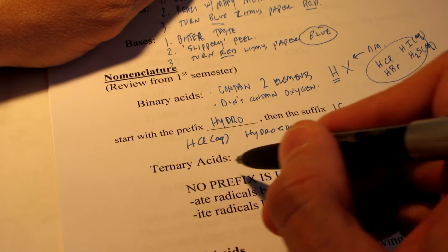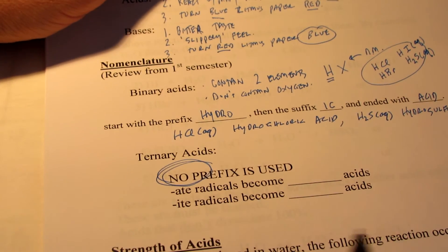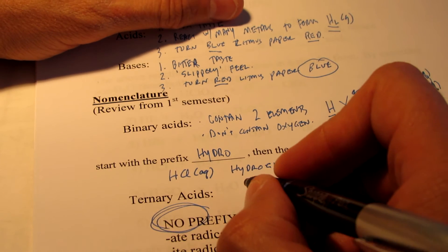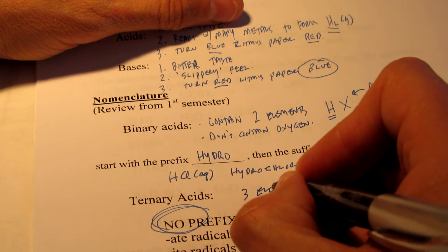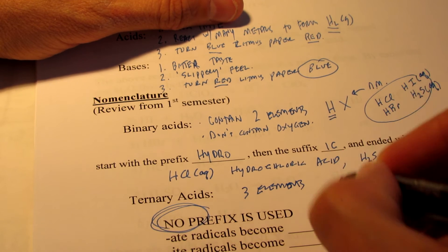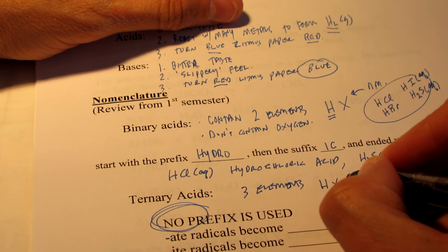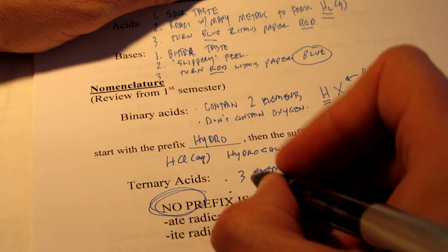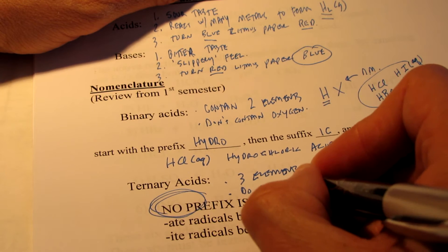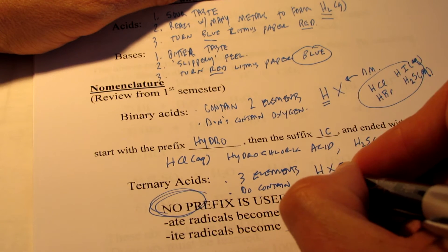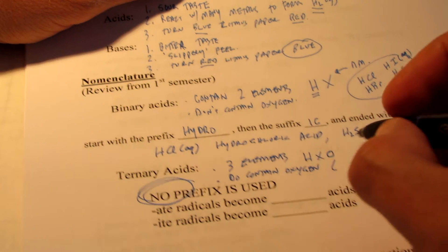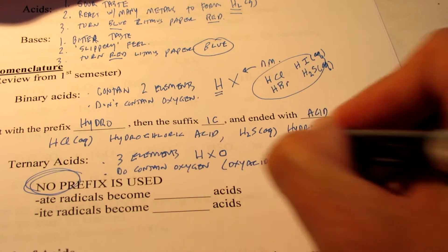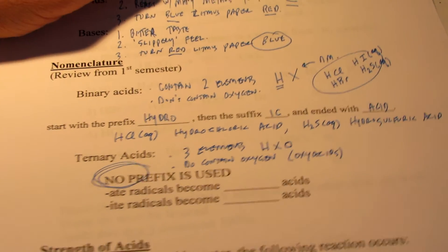Ternary acids. No prefix. Please remember that. The prefix hydro is used only for binary. Now ternary acids will have three elements. We will have H, X, and O. So that means that they will have oxygen. So they do contain oxygen. And for that reason, they are sometimes referred to as oxyacids. So they are the acids that contain oxygen.